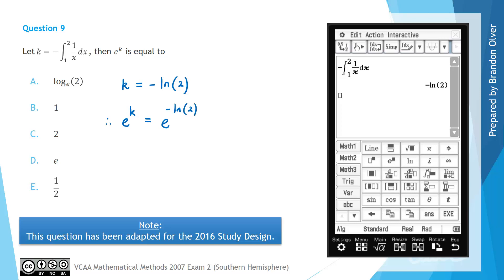And now on the calculator e to the power of k is just e to the power of that answer. And hitting execute, we find that is equal to one half. So that means that option E is the correct answer for this question.